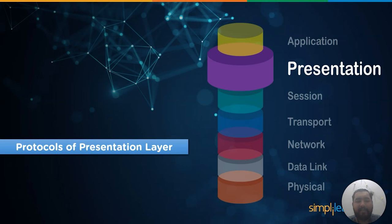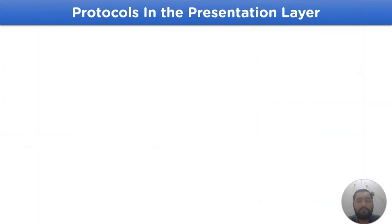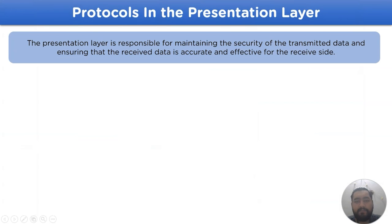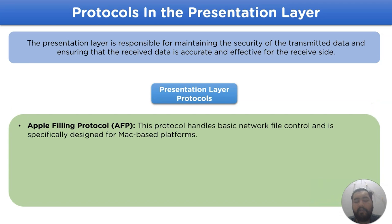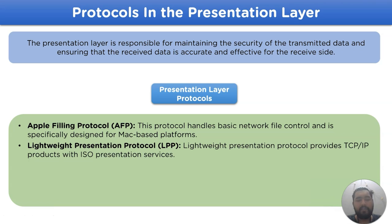Now let's move on to protocols of the presentation layer. The presentation layer is responsible for maintaining the security of the transmitted data and ensuring that the received data is accurate and effective for the receiver end. This is handled by multiple protocols available for the presentation layer. The first is the Apple Filing Protocol, which handles basic network file control and is specifically designed for Mac-based platforms.